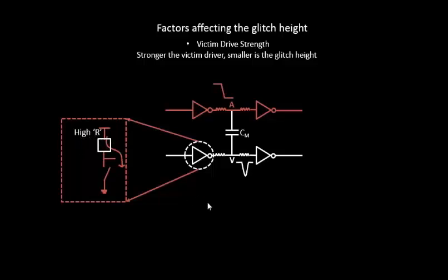When you increase the area of this particular PMOS transistor, the dip will be a bit lower. Why is that the case? Because now the supply voltage is tightly holding the victim capacitance.